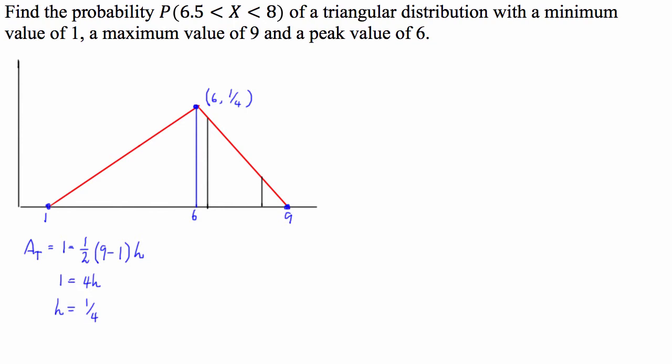So basically, because the probability of a certain event or a certain domain occurring on any of these distributions is equal to the area that is under the curve between the endpoints of the domain, what we're looking for is the area of this part of our distribution here.